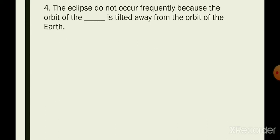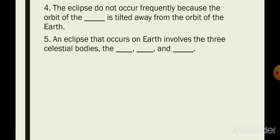Four: the eclipse do not occur frequently because the orbit of the blank is tilted away from the orbit of the Earth. Number five: an eclipse that occurs on Earth involves the three celestial bodies the blank, blank, and blank.